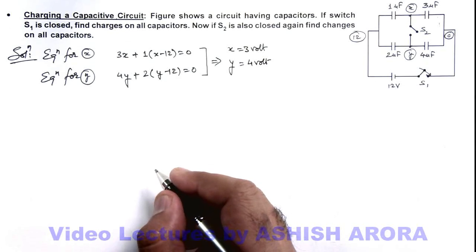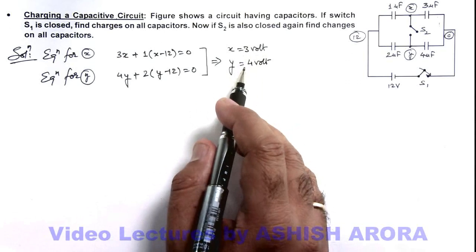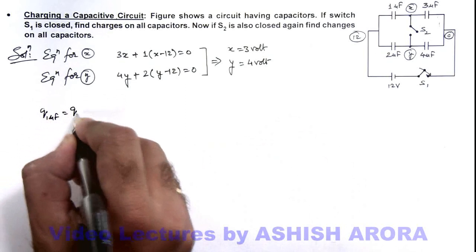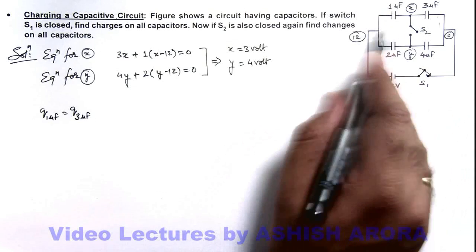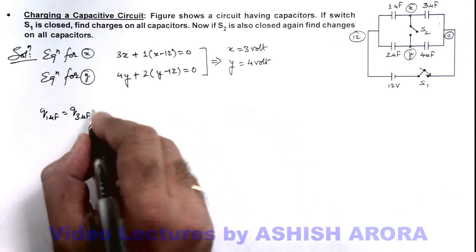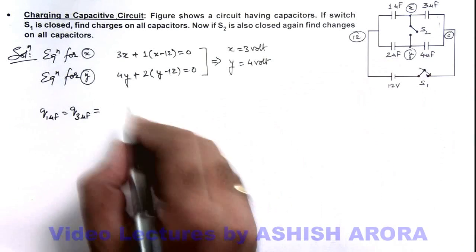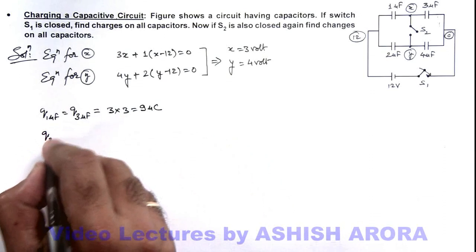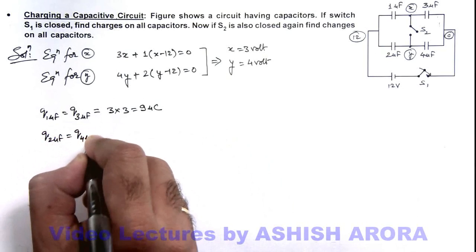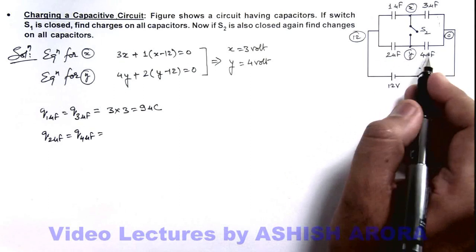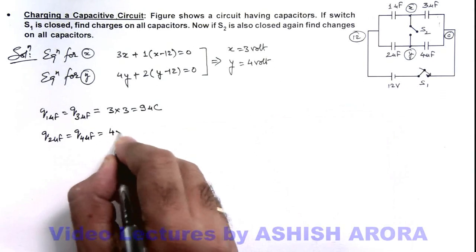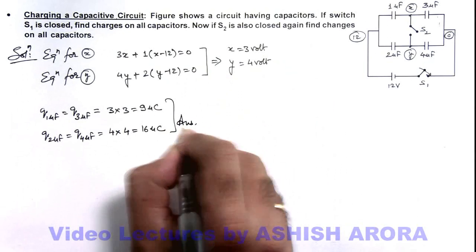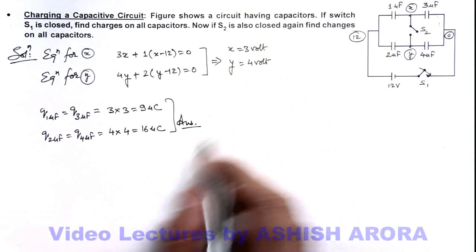Now having the values of x and y, we can directly get the charges on all capacitors. The charge on the 1 microfarad capacitor equals the charge on the 3 microfarad capacitor because both are in series with S2 open. This charge equals 3x, so it is 3 multiplied by 3, that is 9 microcoulombs. The charge on the 2 microfarad capacitor equals the charge on the 4 microfarad capacitor as both are in series, and they equal 4y, so 4 multiplied by 4 is 16 microcoulombs.